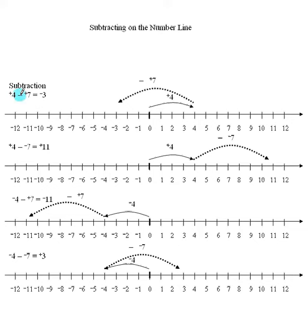Let me start with the first question: 4 subtract positive 7. I said in the rule you keep the first number as it is, you change the subtract to add, and you change the sign of the second number. So this now becomes an addition of positive 4 and adding negative 7.